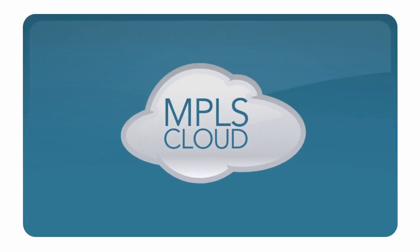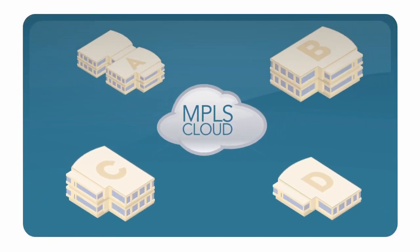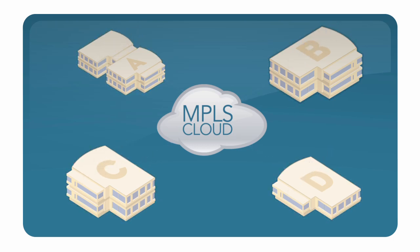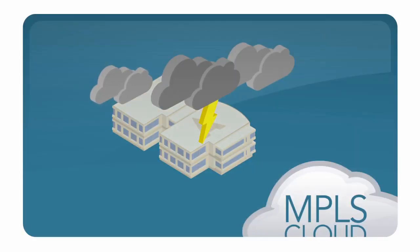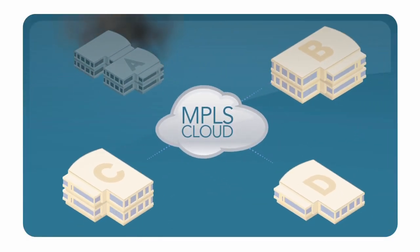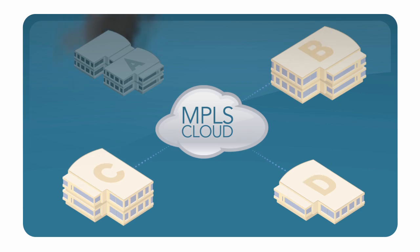MPLS solves this by creating a cloud among all. This MPLS cloud is fully meshed, which means any location can act as a host. Office B can now talk directly to Office D. And should disaster strike, any other location can immediately act as the host, virtually eliminating downtime and lost data.